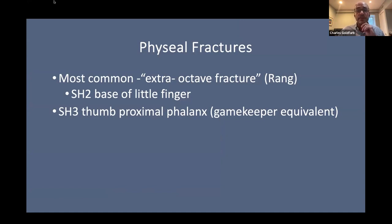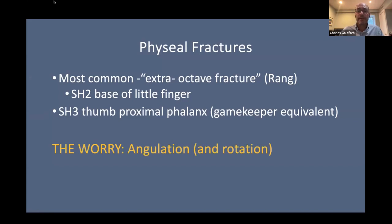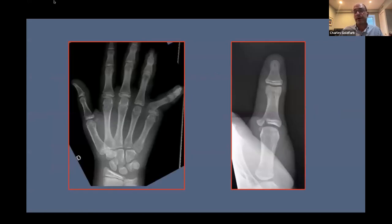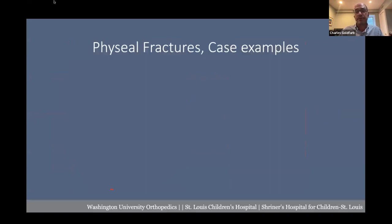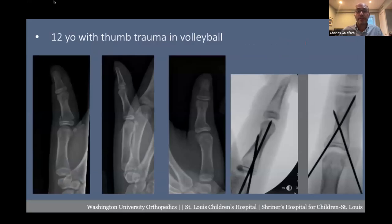A lot of these can be treated successfully in the emergency department. Our typical strategy is obtain an anatomic reduction in the ED, buddy tape or cast, see them at a week for x-rays in cast, then hopefully take the cast off at three weeks and assess clinically. Here's a Salter-Harris 2 or extra-physeal fracture at the base of the thumb proximal phalanx — treated with closed reduction and pinning. Here's an extra-octave fracture, relatively straightforward compared to subcondylar fractures.